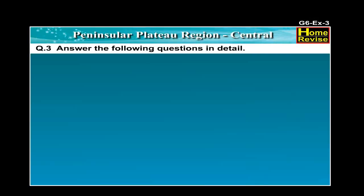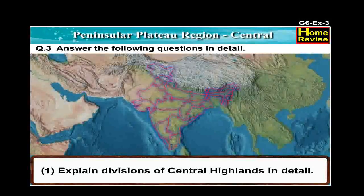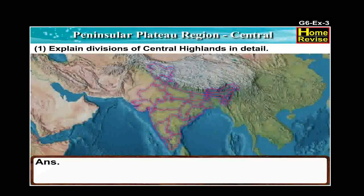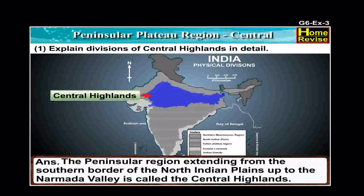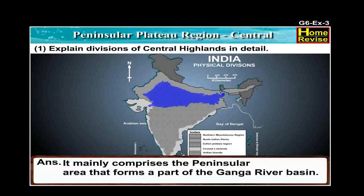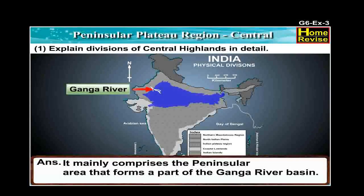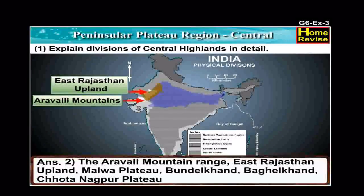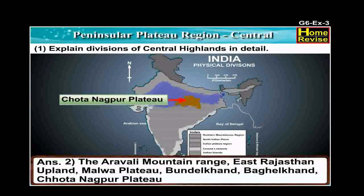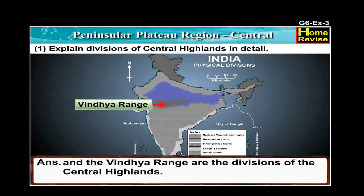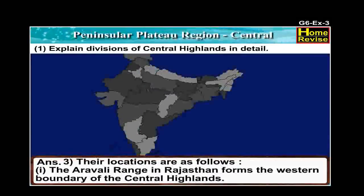Question number 3: Answer the following questions in detail. Number 1: Explain divisions of central highlands in detail. The answer is: The peninsular region extending from the southern border of the North Indian Plains up to the Narmada Valley is called the Central Highlands. It mainly comprises the peninsular area that forms a part of the Ganga River Basin. The Aravalli Mountain Range, East Rajasthan Upland, Malwa Plateau, Bundelkhand, Bagelkhand, Chhota Nagpur Plateau and the Vindhya Range are the divisions of the central highlands.